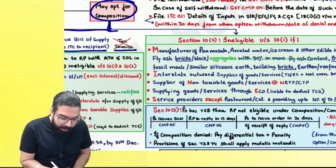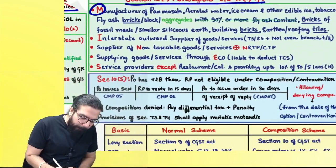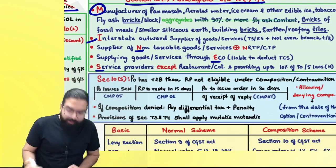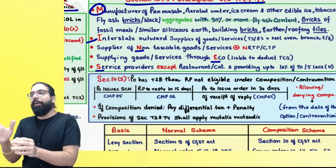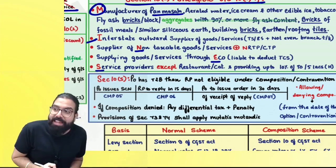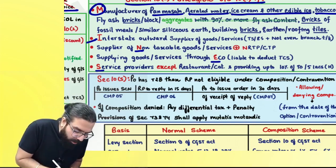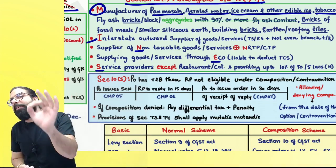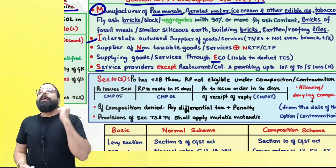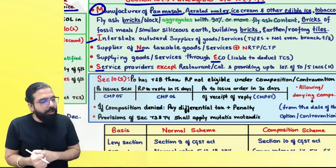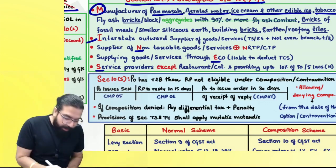On the right-hand side, these are the ineligible people. I call them MINES. Always remember: M in MINES stands for manufacturer — if you are a manufacturer of pan masala (P), aerated water (A), ice cream (I), and tobacco (T) — PAIT — then you are ineligible. The government also added: manufacturers of fly ash bricks...